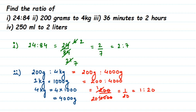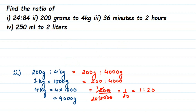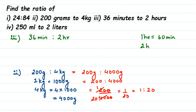The third question: we have 36 minutes is to 2 hours. One is in minutes and one is in hours, so we need to convert to the same unit. I'll convert hours into minutes. Since 1 hour = 60 minutes, 2 hours = 2 × 60 = 120 minutes.